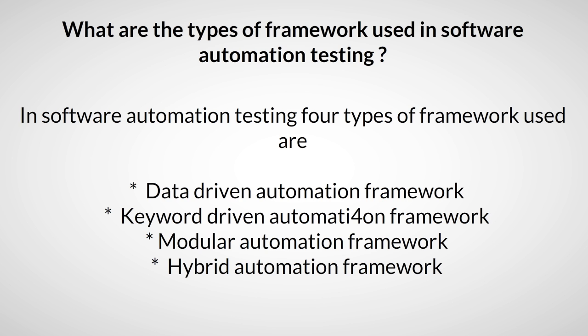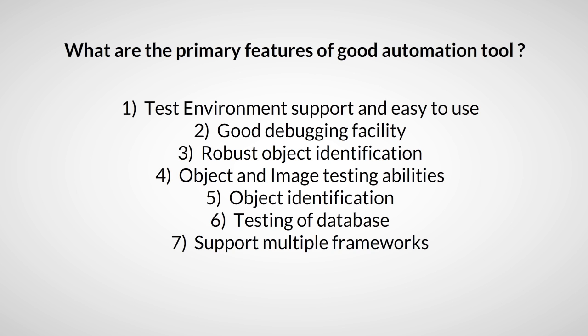What are the types of frameworks used in software automation testing? In software automation testing, four types of frameworks are used: first, data-driven automation framework; second, keyword-driven automation framework; third, modular automation framework.